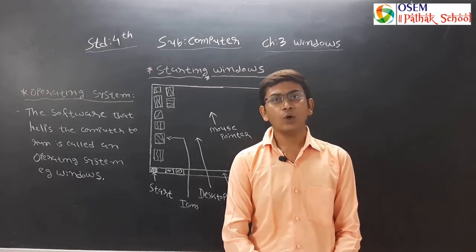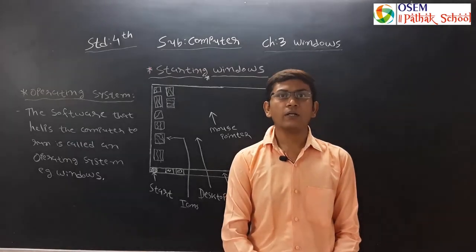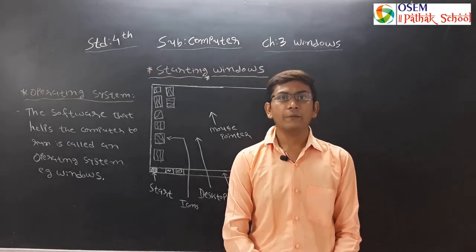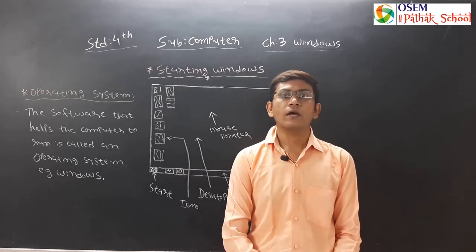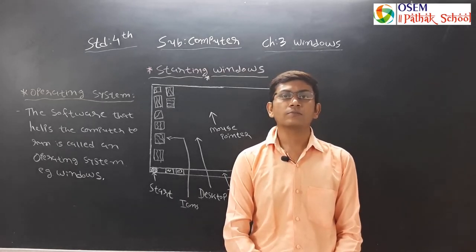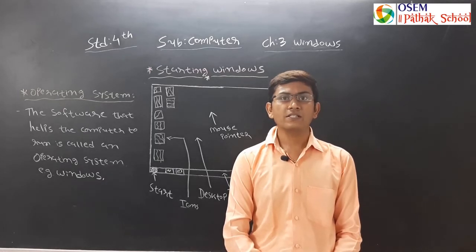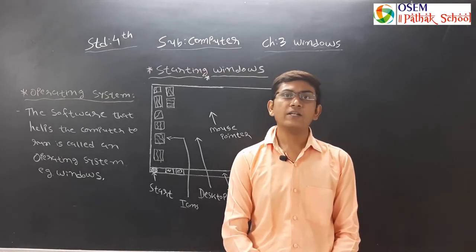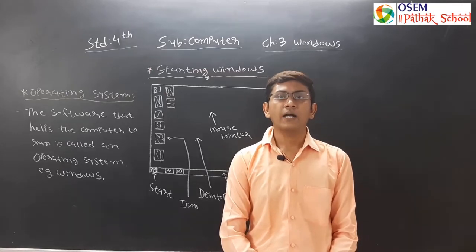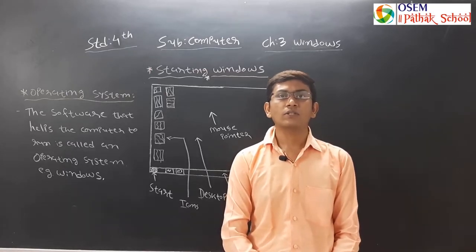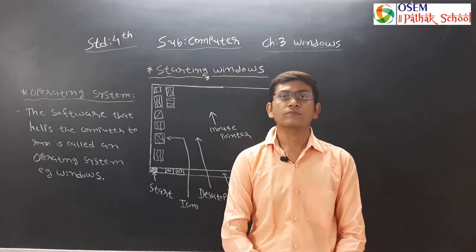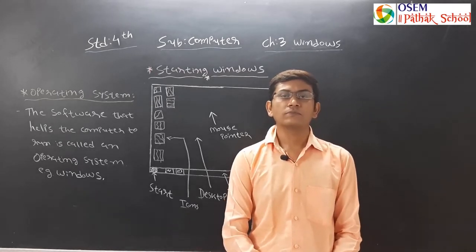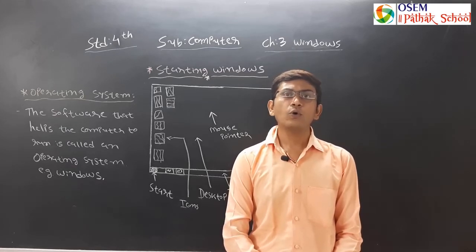Now, you know the main functions of a computer are input, processing, and output. To perform these functions, a computer needs both hardware and software. Hardware means all the parts that you can see and touch, and software means the instructions needed by the computer to do all the work.